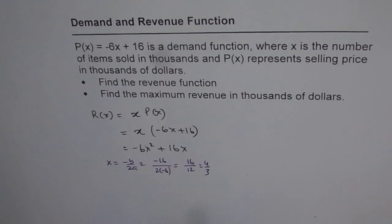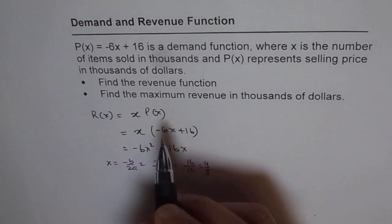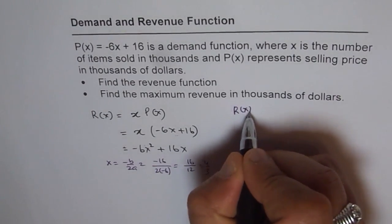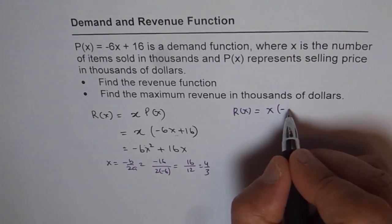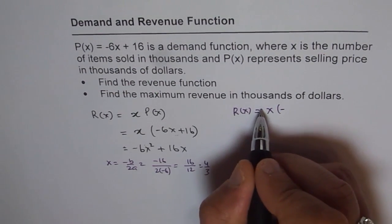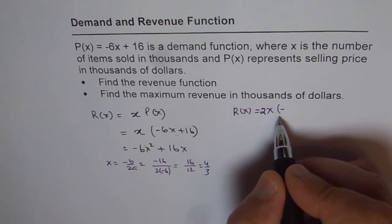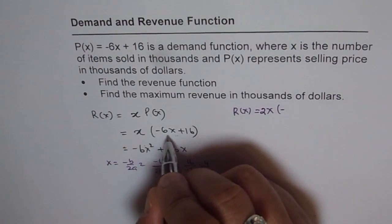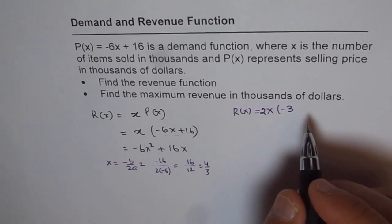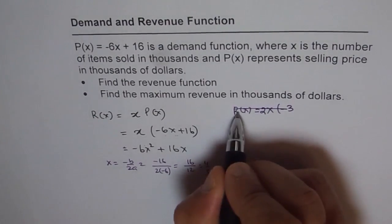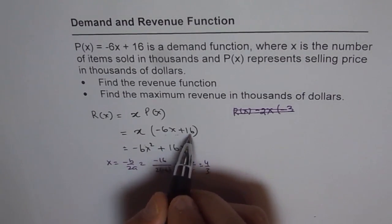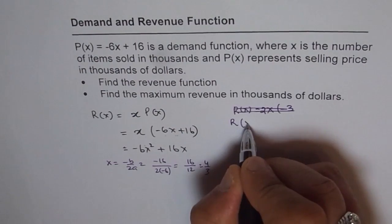The other way is to do partial factoring. We have the revenue function as x times (-6x + 16). Let me correct this - the function is x times (-6x + 16), so that is our revenue function.